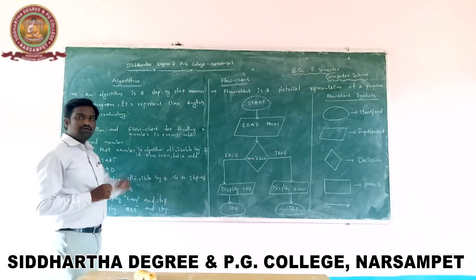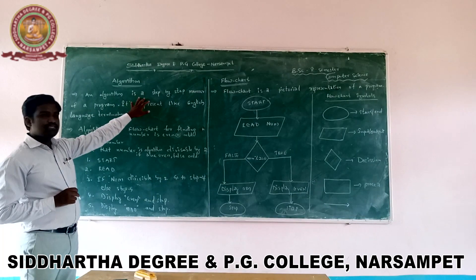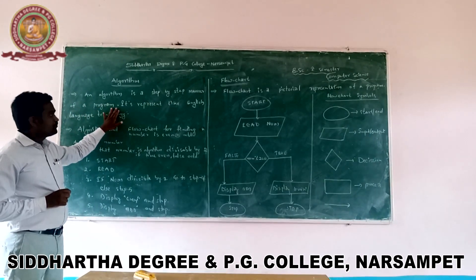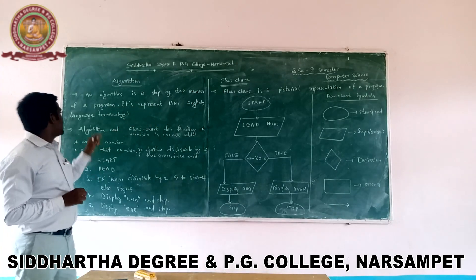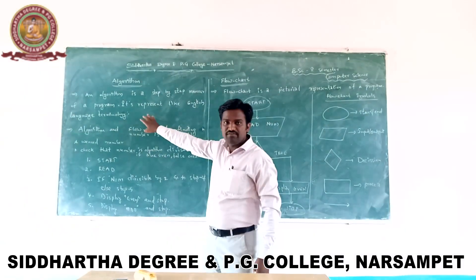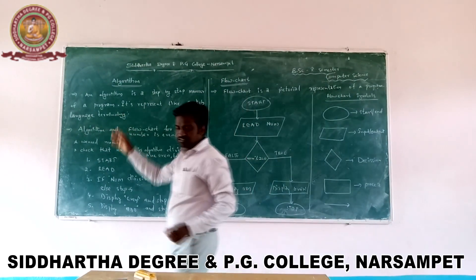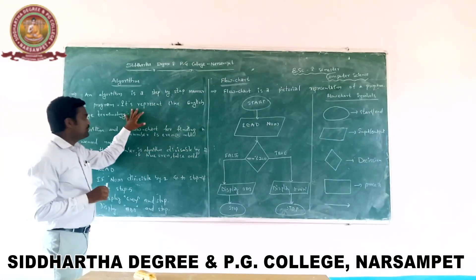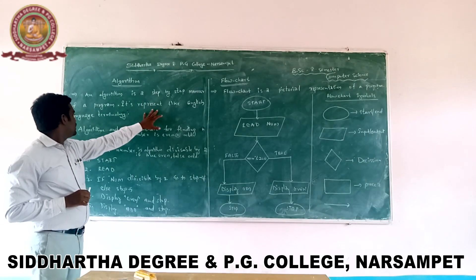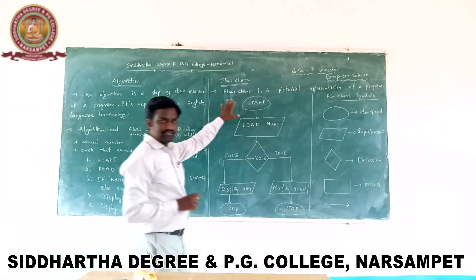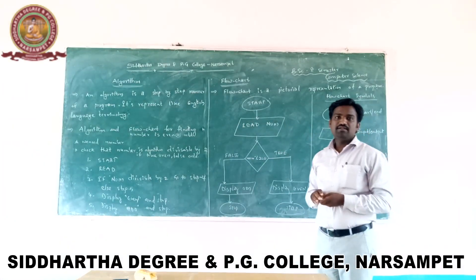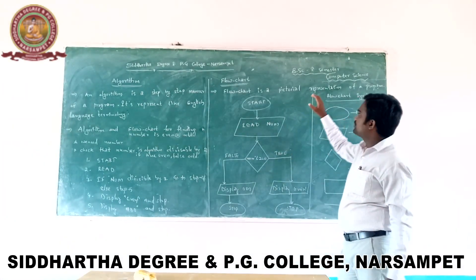An algorithm is a step-by-step manner of a given program. It represents like English language terminology, and it is understandable by everybody. This algorithm is useful to solve any problem. A flowchart is a pictorial representation of a program, in a diagrammatic manner. This also can be understood by everyone.